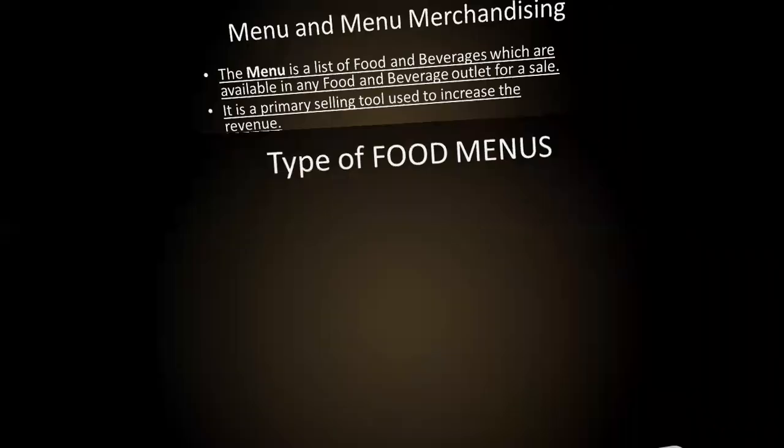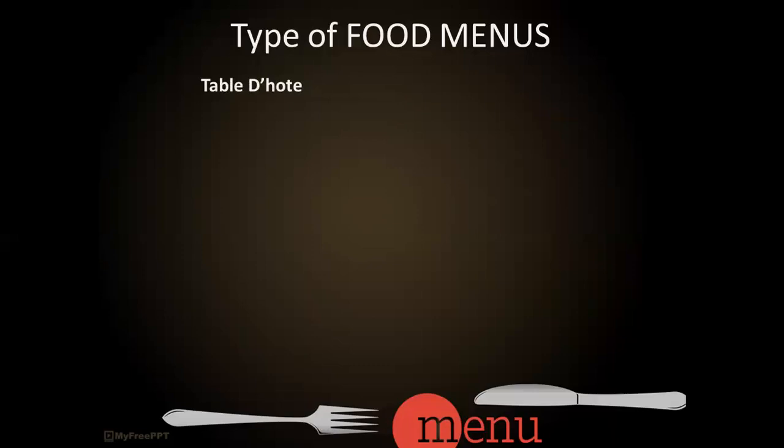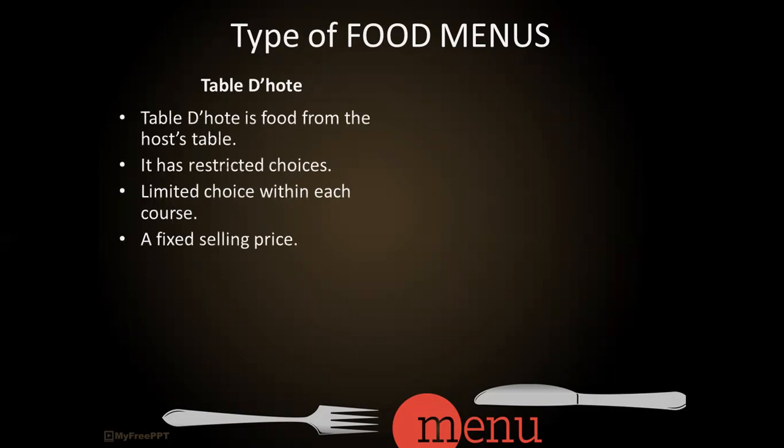Types of food menus. The first food menu is table d'hôte, where we offer restricted choices and have limited choices within each course. A table d'hôte menu can be a four-course or five-course menu, with limited options under every course. This menu has a fixed selling price, and all dishes are ready at one time because the order is known in advance.